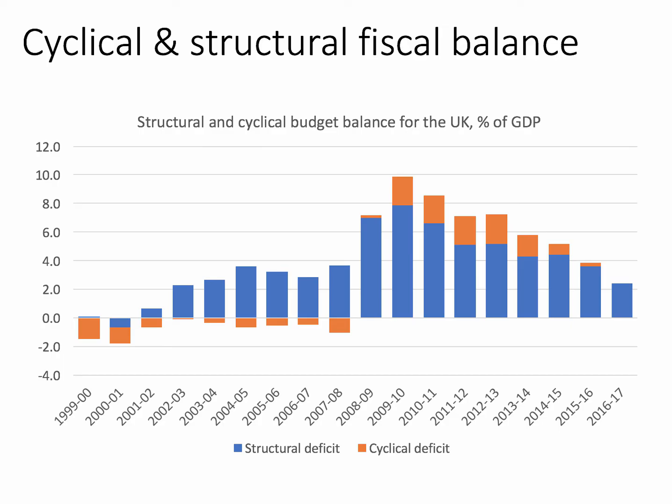Gradually, in recent times, the size of the orange segment has shrunk as the economy has been recovering. Unemployment has been falling — it's now at a 42-year low. The output gap has been getting smaller, meaning actual output has been getting closer to its longer-run productive potential. Because the economy has been growing since 2010–2011, the cyclical fiscal deficit has been shrinking. Indeed, in 2016–2017, according to the Office for Budget Responsibility, there was no cyclical fiscal deficit.